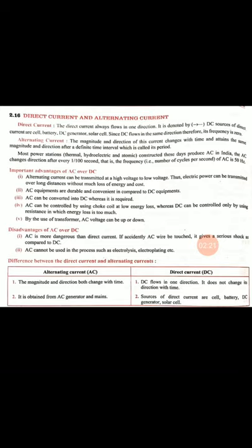Alternative current changes its magnitude and direction after a specific time. The frequency of AC in our supply is 50 hertz, meaning in one second the alternative current changes its polarity 50 times — 50 times positive polarity and 50 times negative polarity.